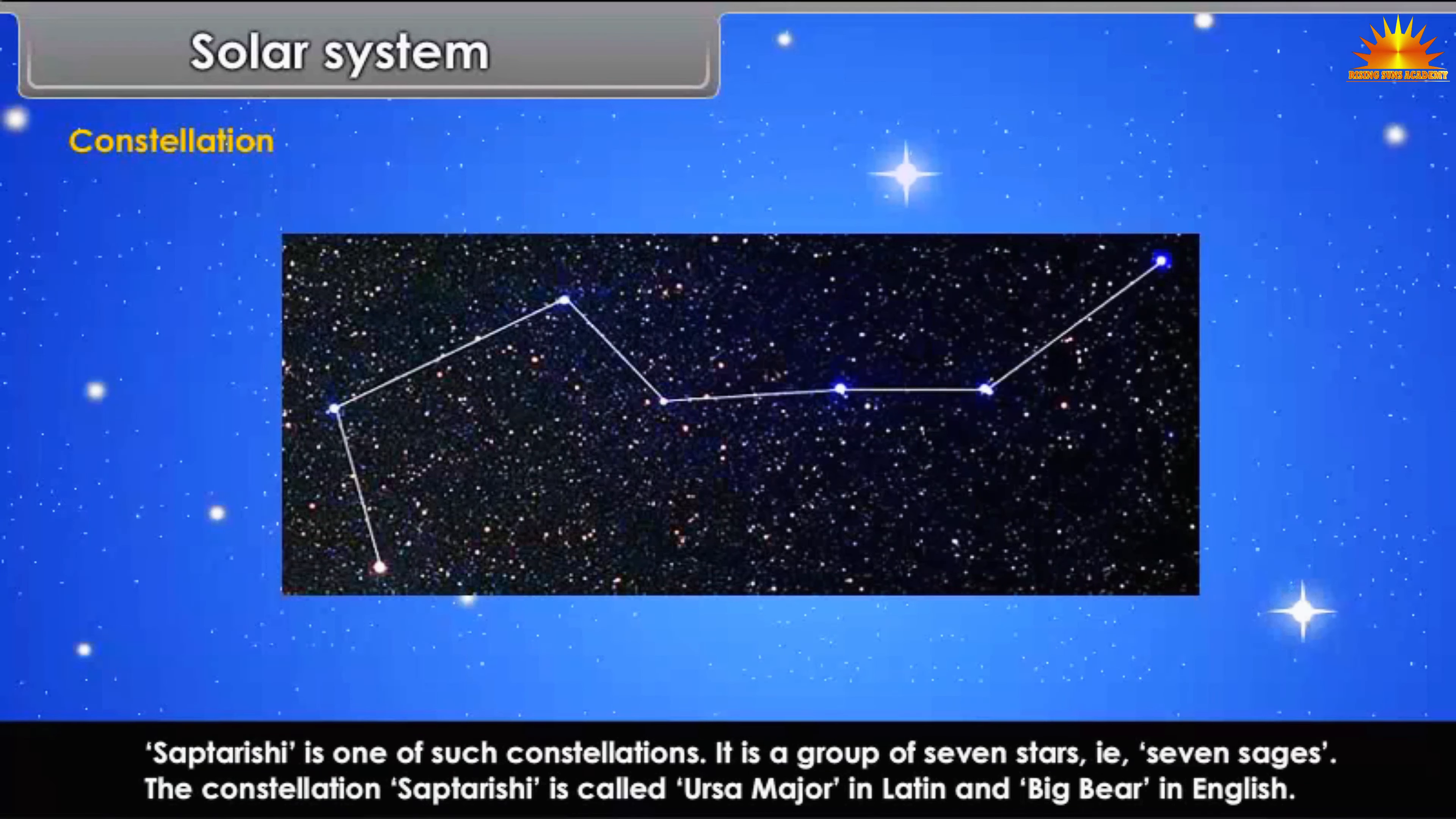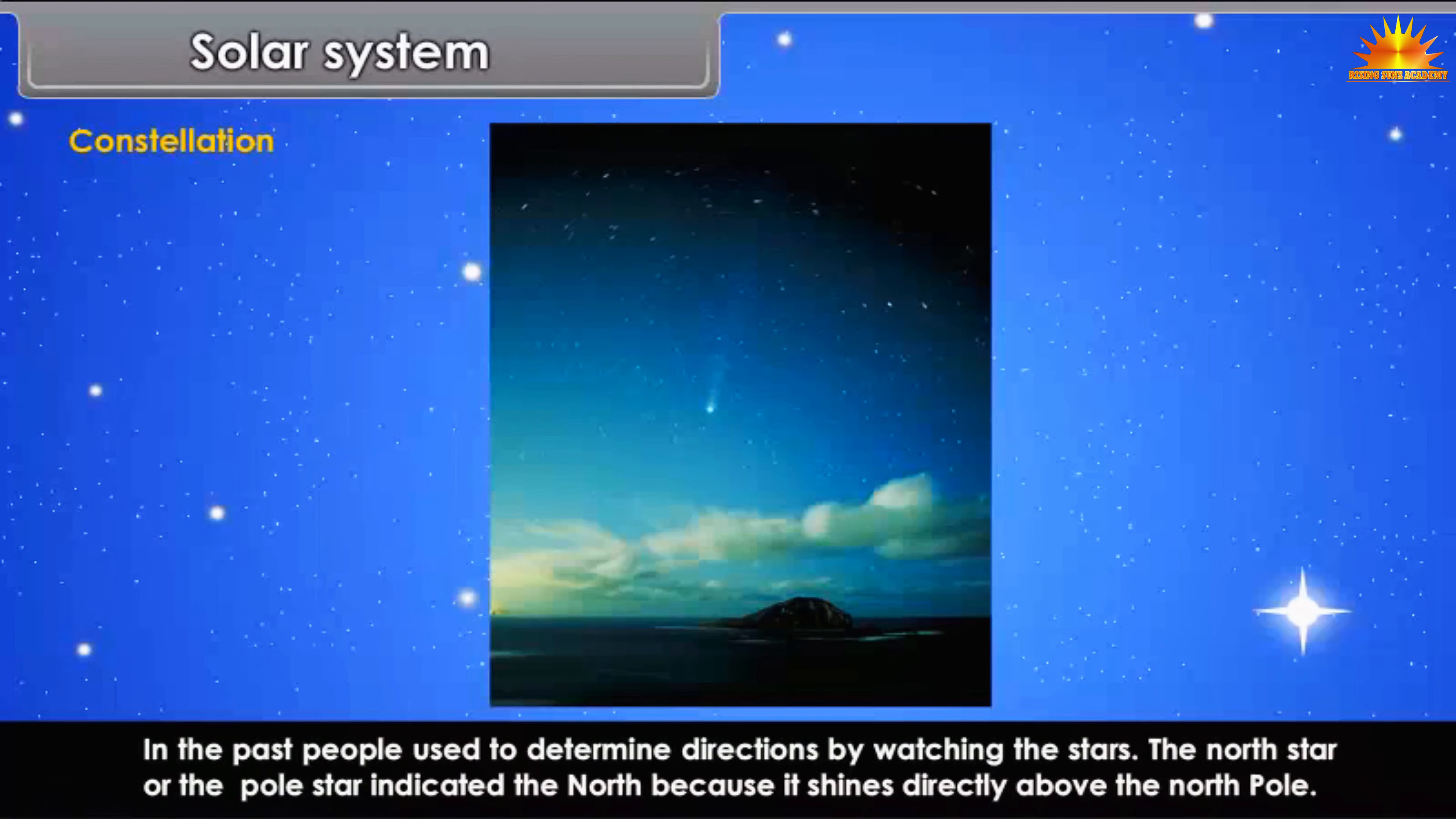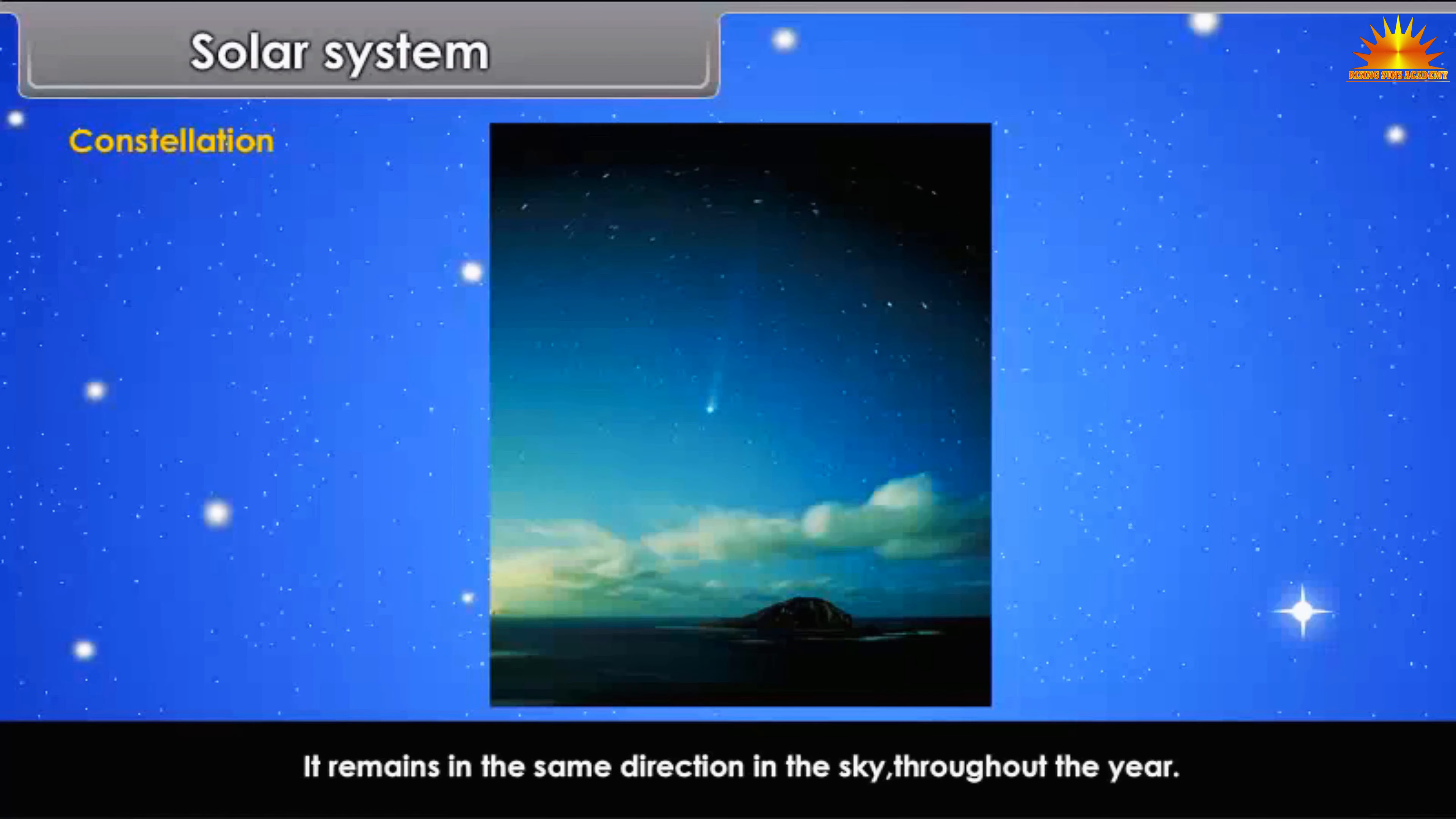The constellation Saptarashi is called Ursa Major in Latin and Big Bear in English. In the past, people used to determine directions by watching the stars. The North Star or the Pole Star indicated the North because it shines directly above the North Pole. It remains in the same direction in the sky throughout the year.